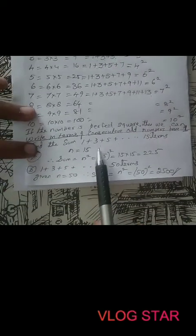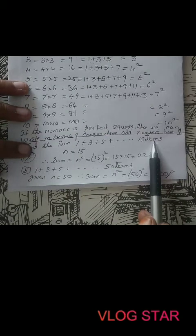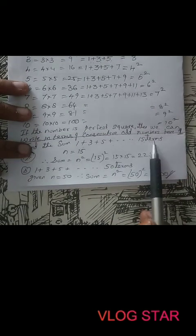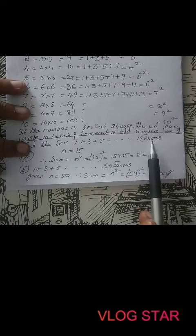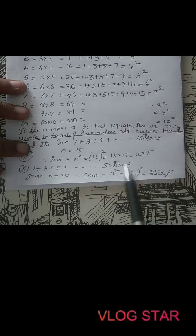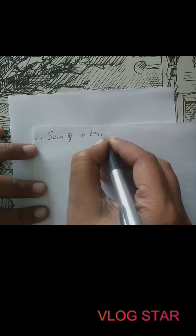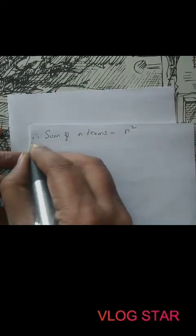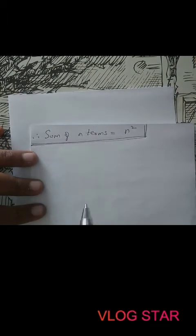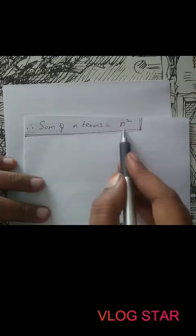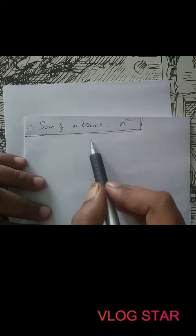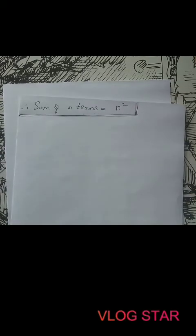So whenever a number is given — if it is a perfect square, you can write it as the sum of consecutive odd terms starting from 1. By using this pattern, you can find the sum of N terms where N can be any large number. Therefore, the sum of N terms equals N squared. Whatever number of terms they give — sum of 15 terms means N equals 15, so 15 squared; sum of 20 terms means 20 squared; sum of 14 terms means 14 squared. Like that, we complete these sums.